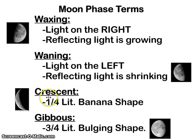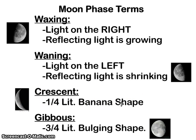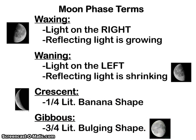The word crescent means one-fourth of the moon is illuminated, and it has a banana shape or like a C shape. The word gibbous means bulging — so here you have three-fourths of the moon illuminated. Make sure you define all four of these terms in your note-taking packet.